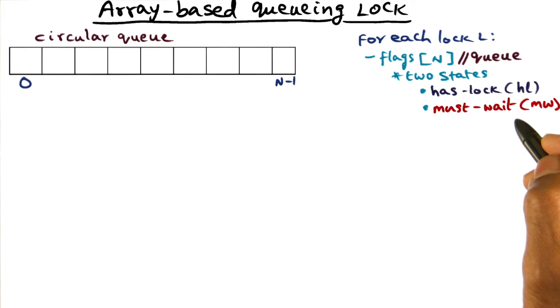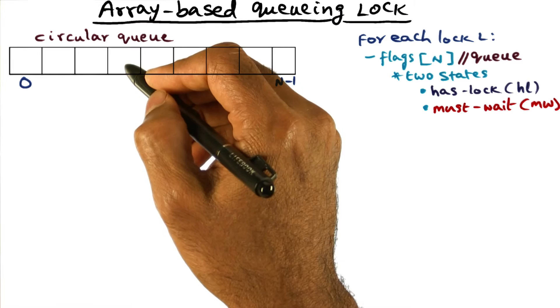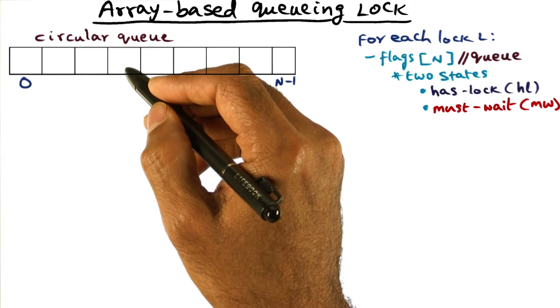HasLock says that whoever is waiting on a particular slot has the lock. So if this particular entry is HL, then that means whichever processor happens to be waiting on this particular slot is the current winner of the lock and is using the lock.